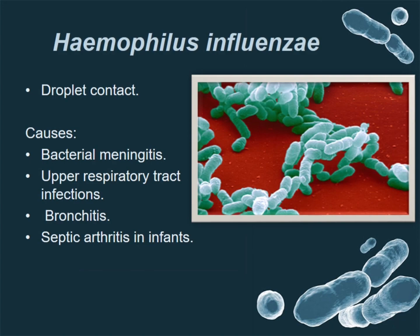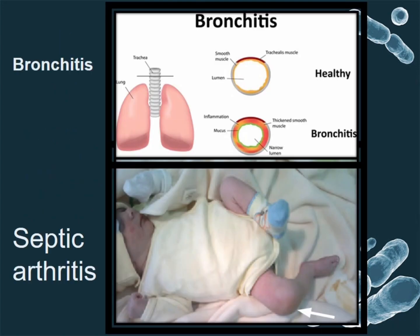Haemophilus influenzae — this rod-shaped species can be transmitted from the droplet infection of another exposed patient. It causes meningitis, respiratory tract infection, bronchitis, and arthritis in kids. We can see the wall of the bronchus of a patient thickened, resulting in inflammation and pain, and in the picture at the bottom we can see an infant with abnormal growth of a limb due to septic arthritis.